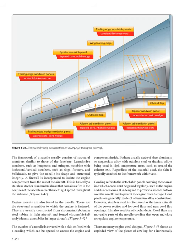The framework of a nacelle usually consists of structural members similar to those of the fuselage. Lengthwise members such as longerons and stringers combine with horizontal/vertical members such as rings, formers, and bulkheads to give the nacelle its shape and structural integrity. A firewall is incorporated to isolate the engine compartment from the rest of the aircraft — basically a stainless steel or titanium bulkhead that contains a fire in the confines of the nacelle rather than letting it spread throughout the airframe. Engine mounts are also found in the nacelle; these are the structural assemblies to which the engine is fastened, usually constructed from chrome-molybdenum steel tubing in light aircraft and forged chrome-nickel-molybdenum assemblies in larger aircraft.